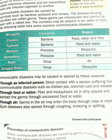First of all, through an infected person. If a person is suffering from any disease and a healthy person comes in direct contact with such a person, then the healthy person can also suffer from the same communicable disease, like chicken pox, common cold, and measles.